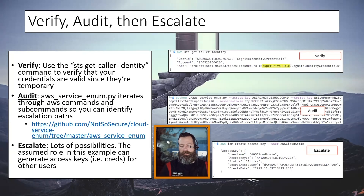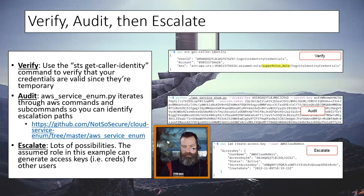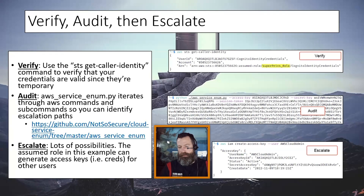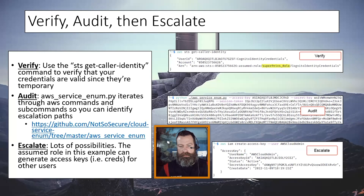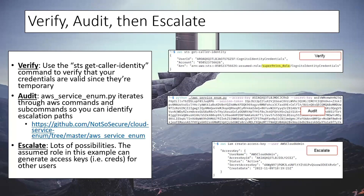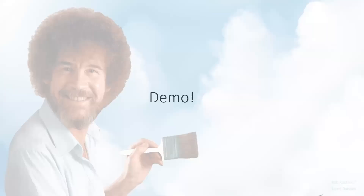Skipping to the next step: escalate. There are lots of possibilities for escalating in AWS. This particular demo is just showing how the temporary access keys allowed the IAM role to create access keys for other users — in this case, for the AWS Cloud Admin user, which sounds like a really nice target to get an access key for.